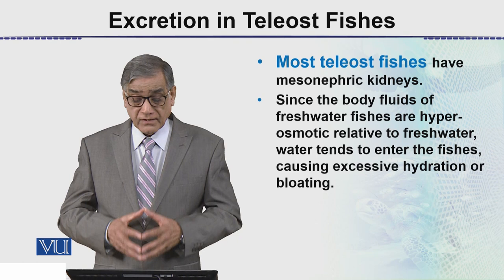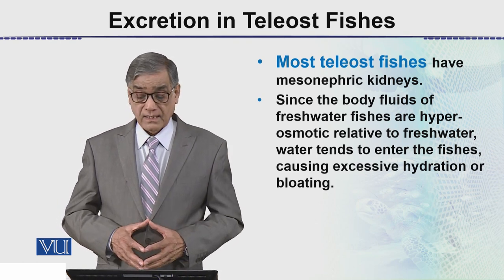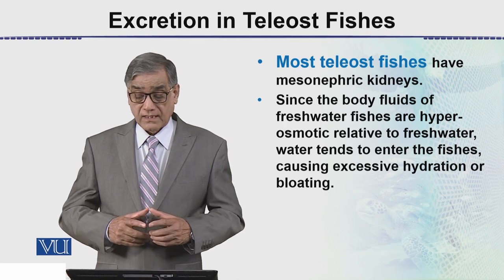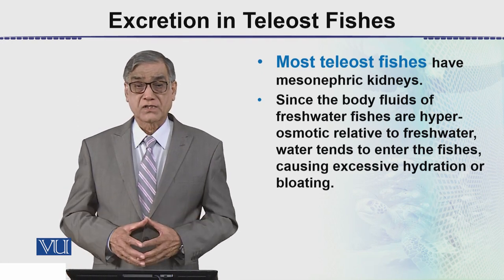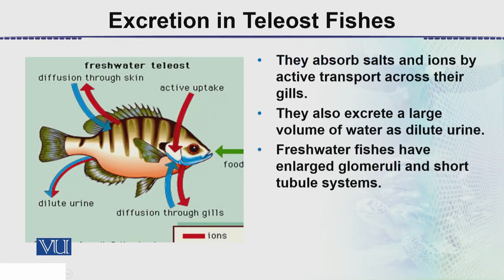Since the body fluids of fresh water fishes are hyperosmotic relative to fresh water, this water tends to enter the fish, causing excessive hydration — which is called bloating. Now, they absorb salts and ions by active transport across their gills, so ions are absorbed into the body through the gills.